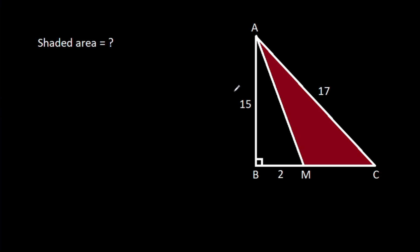In this video, we have been given that angle ABC is 90 degrees, AB is 15, BM is 2, AC is 17. We have to find the shaded area.